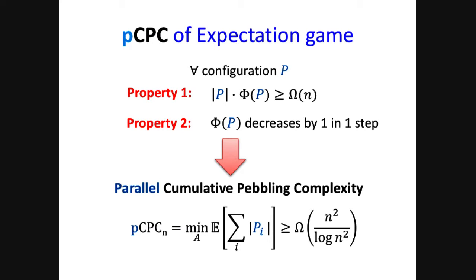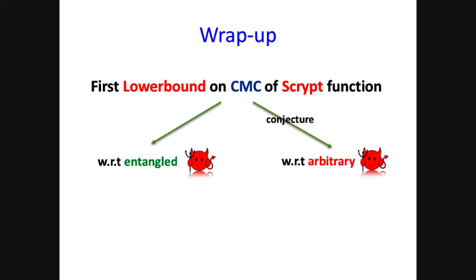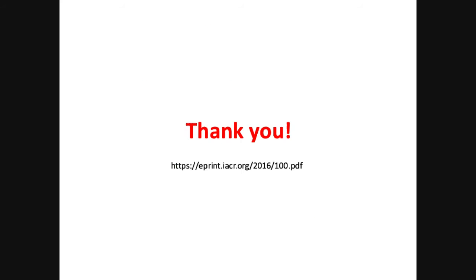To wrap up: we give the first lower bound on cumulative memory complexity for S-Crypt with respect to entangled adversaries, and under a conjecture our results hold for arbitrary adversaries. It remains an open question whether the results hold for arbitrary adversaries without relying on any conjecture. Our proof technique also has further applications in proofs of space; more details can be found in the full version of the paper. Thank you for your attention.